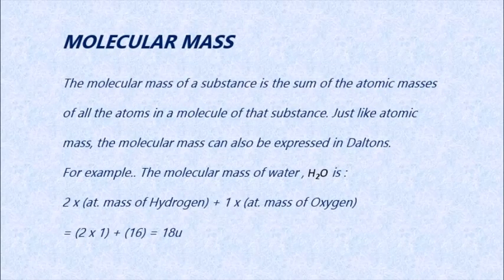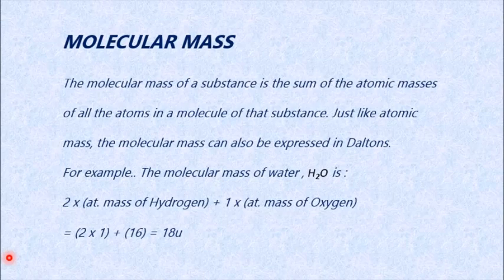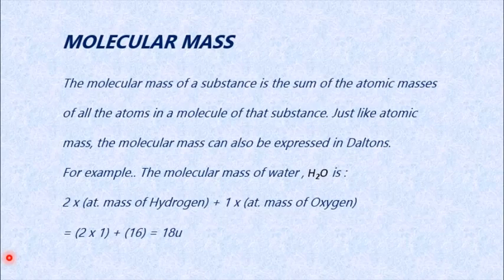In this part we will be learning about the other stuff in this chapter. First is the molecular mass. The molecular mass of a substance is the sum of atomic masses of all the atoms in a single molecule of that substance. The molecular mass is expressed in the unit dalton, and the symbol is u.